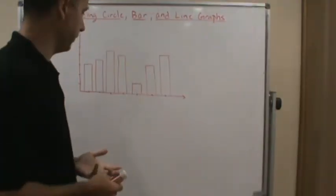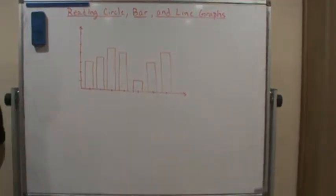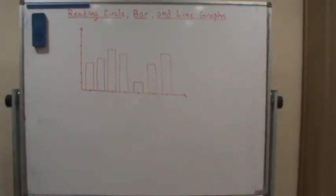So a bar graph is a graph that uses bars. The bars represent categories. Bar graphs could be used for categorical variables or quantitative variables.